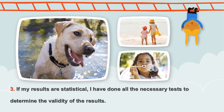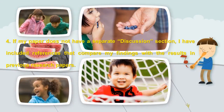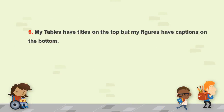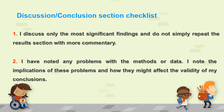Three: If my results are statistical, I have done all the necessary tests to determine the validity of the results. Four: If my paper does not have a separate discussion section, I have included references that compare my findings with the results in previous research papers. Five: I have used the past tense to talk about the specific results of my paper, but I have used the present tense to talk about descriptions of figures or tables and generalizations based on my results or general statements about my whole field.